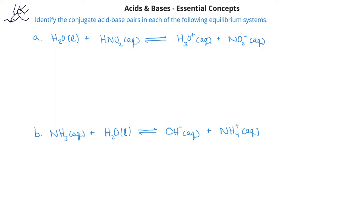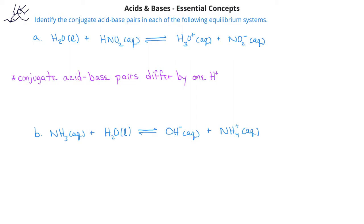Let's look at the first example. In this situation, we have water reacting with nitrous acid HNO2 to produce the hydronium ion and the nitrite ion NO2-. In order to identify conjugate acid-base pairs, we have to remember that, by definition, conjugate acid-base pairs differ by only one hydrogen ion in their structures or formulas. In this first example, we have H2O and on the product side we have H3O+, and those two structures differ by one hydrogen ion, so therefore the water and the hydronium ion are a conjugate acid-base pair.